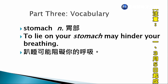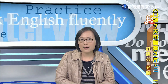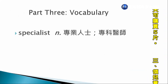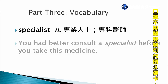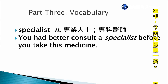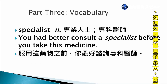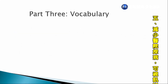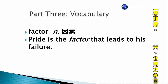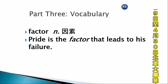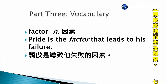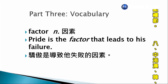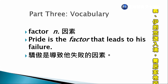Lie on your stomach再一次就是趴睡，hinder就是阻礙的意思，它會阻礙到你呼吸的順暢，這就是趴睡比較不好的地方。Specialist，專業人士、專科醫師。You had better consult a specialist before you take this medicine. 服用這個藥物之前，你最好諮詢專科醫師。Factor，因素。Pride is the factor that leads to his failure. 驕傲是導致他失敗的因素。Lead to就是導致，也可以代換成result in。